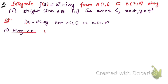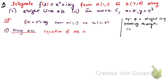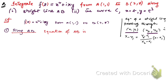First, we integrate along the straight line AB. The equation of a straight line passing through two given points (x₁, y₁) and (x₂, y₂) is: y − y₁ = [(y₂ − y₁)/(x₂ − x₁)] × (x − x₁). We take A as (x₁, y₁) = (1,1) and B as (x₂, y₂) = (2,8).